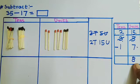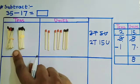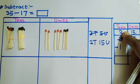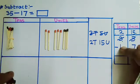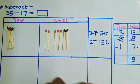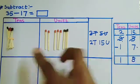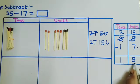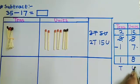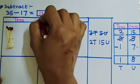We are left with 8 units. And how many tens? 2 tens are remaining. From 2 tens we have to subtract 1 ten — 2 minus 1 — so I will remove this 1 ten from the 2 tens. How many tens are remaining? 1 ten. 1 ten and 8 units means 18. So the answer is 18. We write here: 35 minus 17 is 18.